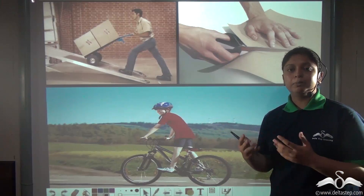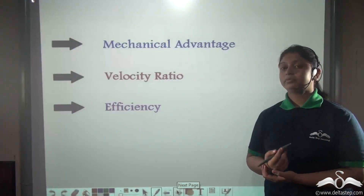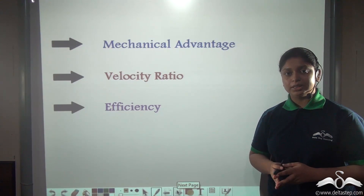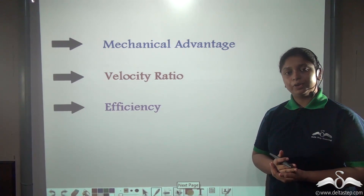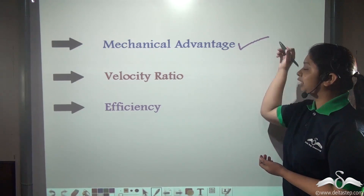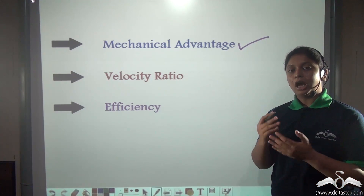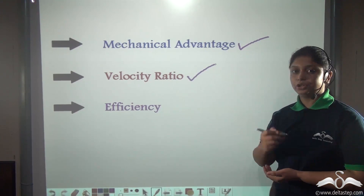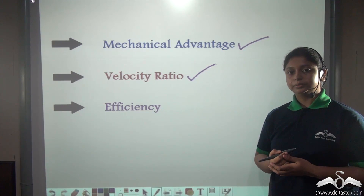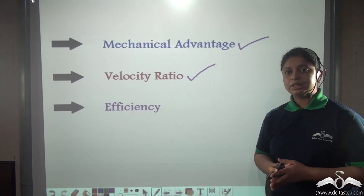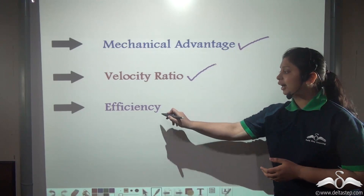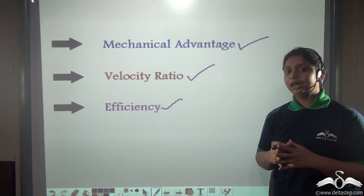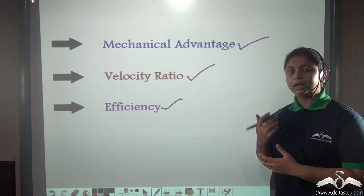So machines help us in many ways. We have also learnt three important terms related to machines. Firstly, what is the advantage of using machines? That is defined by its mechanical advantage. How much the machine moves in doing the work is defined by its velocity ratio. And what is the efficiency of a machine — how efficient is it — is defined by the efficiency of the machine.